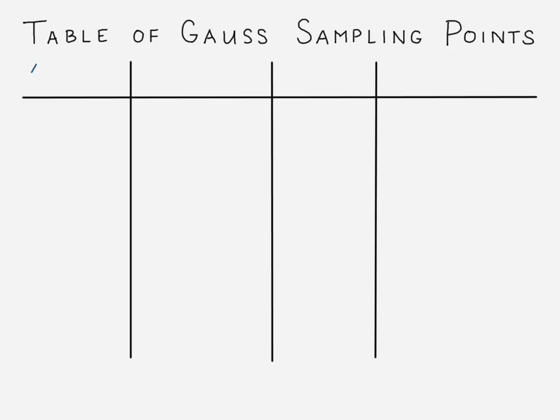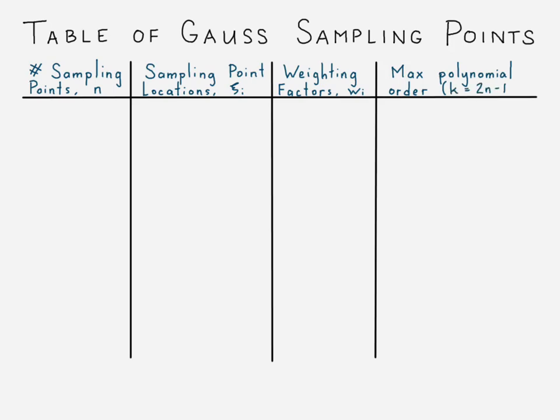All right. So here's a table of Gauss sampling points, Gauss integration points, whatever you might want to call them. And so we have, first we start with the number of sampling points that you might have in your particular integration substitution. And what the location would be in the xi direction, what the location, or the corresponding weight factor would be.